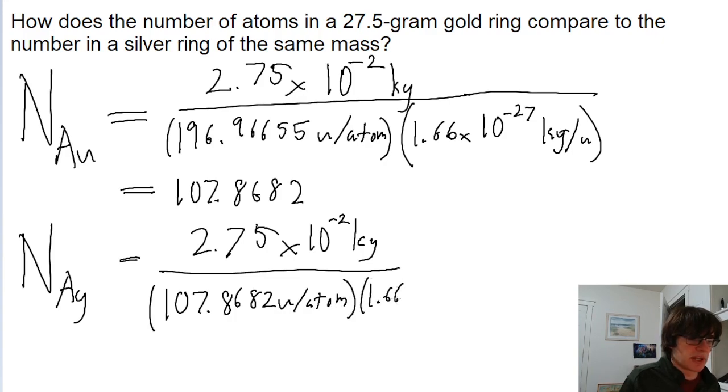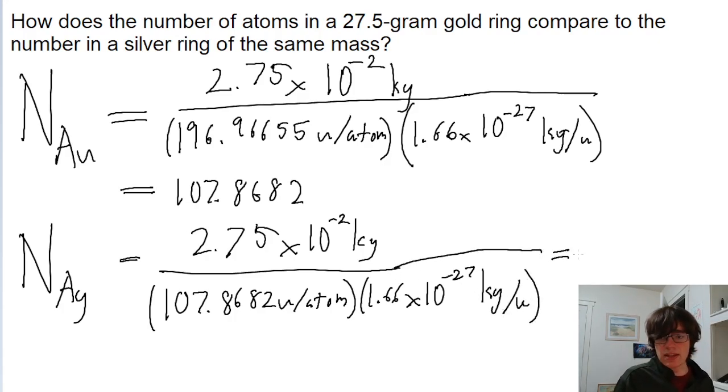Again, we've got to convert from atomic mass units into kilograms. So 1.66 times 10 to the power of negative 27 kilograms per atomic mass unit. Put this into a calculator, and this is a number of atoms of 196.96655.